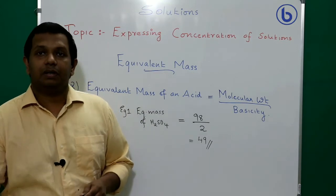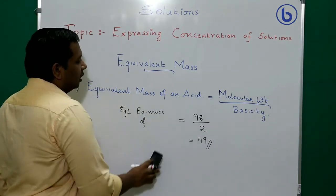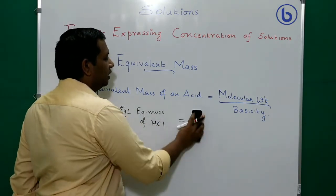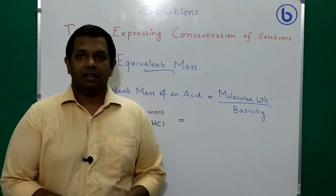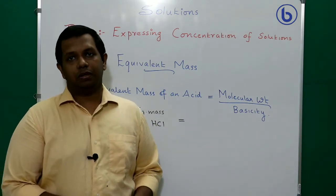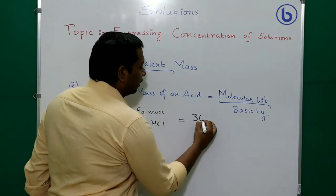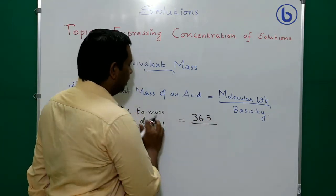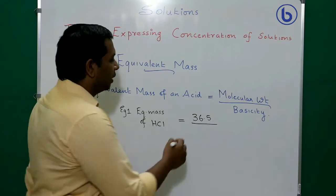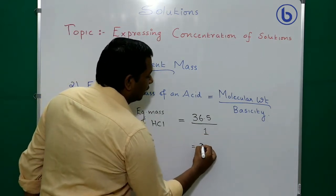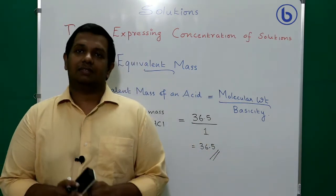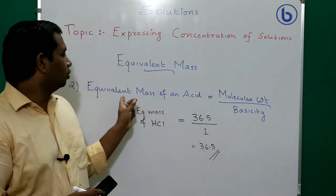Example 2: equivalent mass of hydrochloric acid (HCl). Molecular weight: Cl = 35.5, H = 1; total = 36.5. HCl can donate only 1 H⁺, so basicity = 1. Equivalent mass = 36.5 ÷ 1 = 36.5. The molecular weight and equivalent mass are the same for HCl.